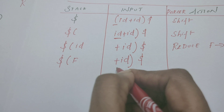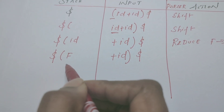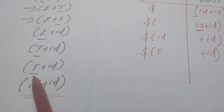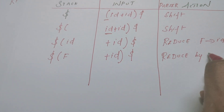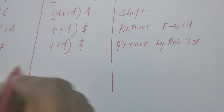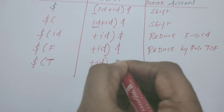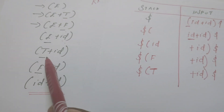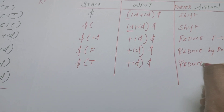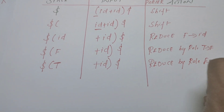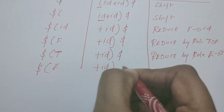After reducing ID to F, the stack holds (F and the input buffer contains + ID)$. There is another potential conflict: shift plus or reduce F to T. Following the derivation, F is reduced to T by rule T → F. Then T is further reduced to E by rule E → T. The stack now holds (E and the input buffer still contains + ID)$.